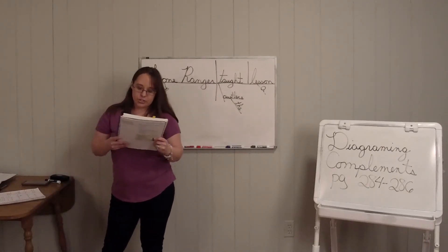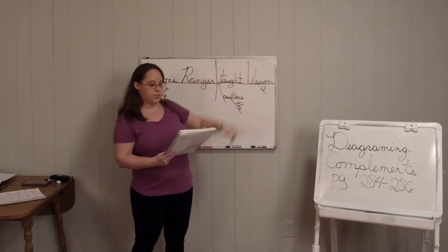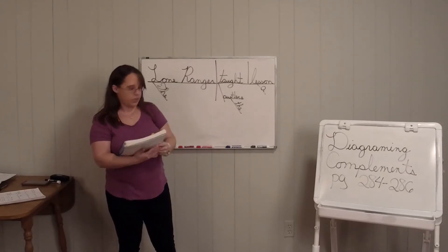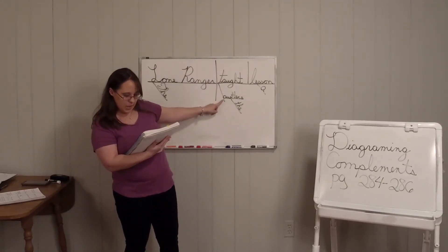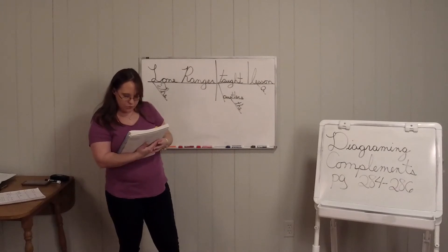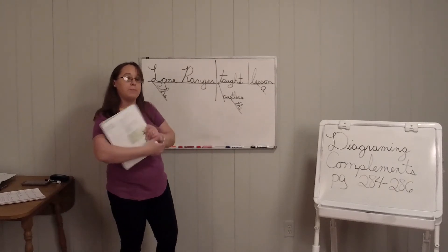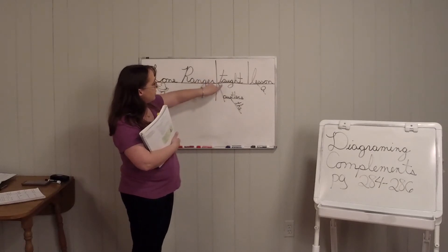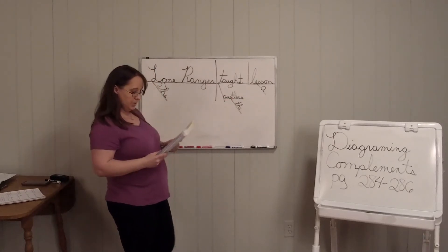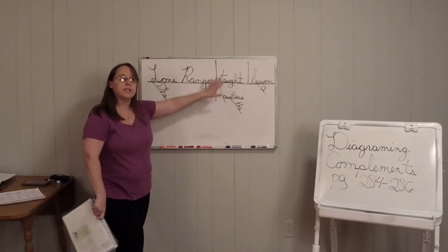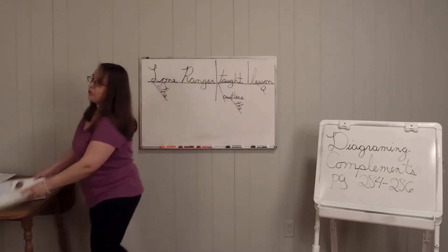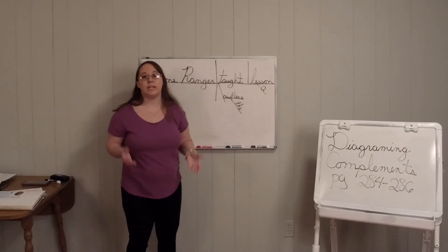The line in front of a direct object is vertical — straight up and down. An indirect object is always diagrammed beneath the verb. It is diagrammed almost like a prepositional phrase, except that there is no preposition. Remember the prepositional phrase — you put the preposition here and the object there. So it's similar to a prepositional phrase, but for the indirect object. You have to put that line there to show that it's an indirect object.